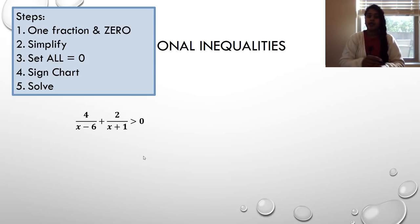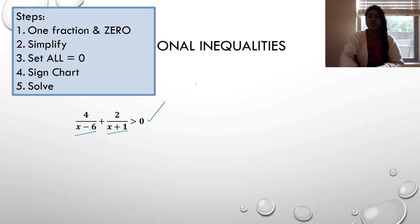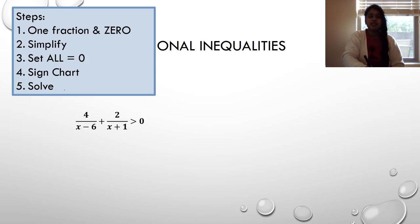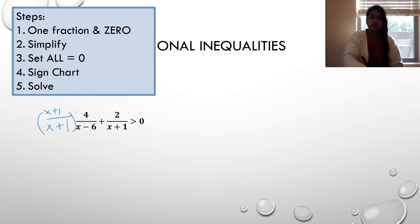Looking at step one for our example, 4/(x−6) + 2/(x+1) > 0: I already have my zero, so that's good. But I have two fractions, so I have to deal with that using the least common denominator. If you're struggling with this, go to my algebra playlist and watch the video on fractions.